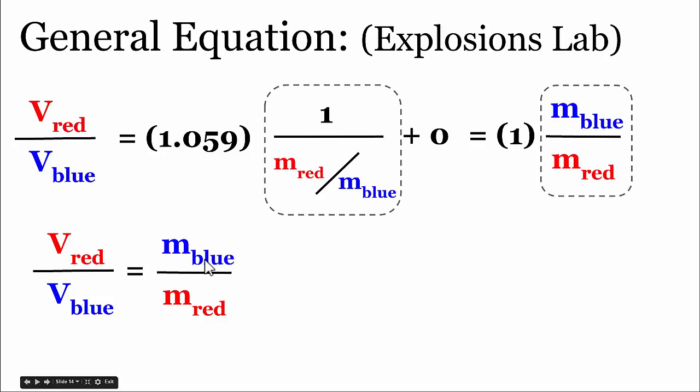So if the blue mass is double the red mass, the red velocity will be double the blue's velocity. Or if the red mass is three times greater than the blue's mass, we'd expect that the blue's velocity would be three times greater than the red's velocity.